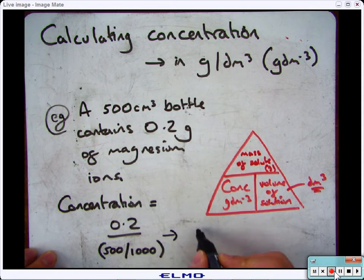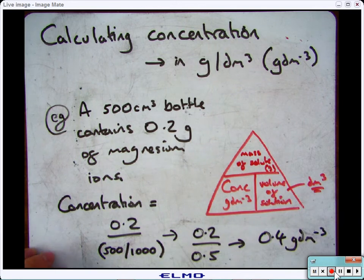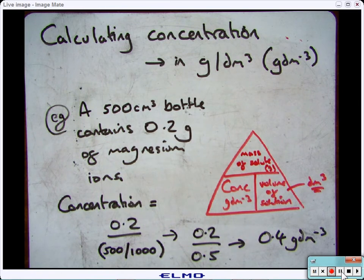So that will give you 0.2 divided by 0.5, which gives you 0.4 grams per decimetre cubed. Again, any issues on that, come and see me.